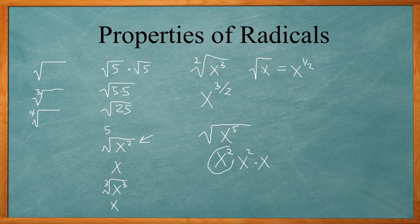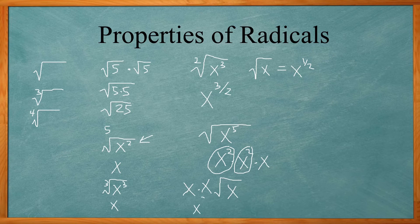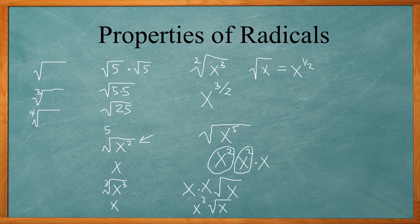So for every two of them, it comes outside the radical. What didn't come out stays underneath the radical. And x times x is x squared. And then x stays underneath. So x squared times the square root of x. That's another way to write the square root of x to the fifth power.